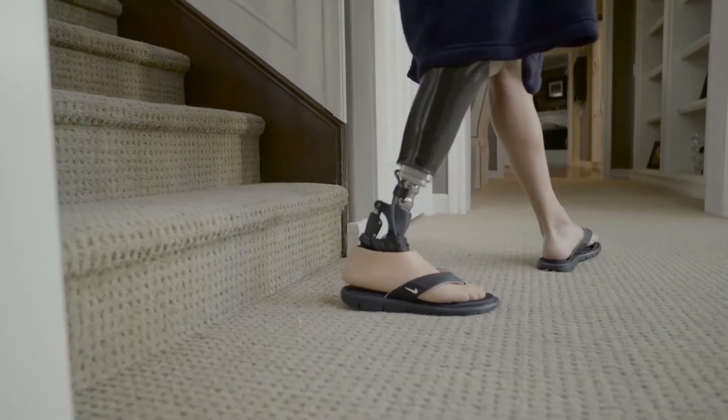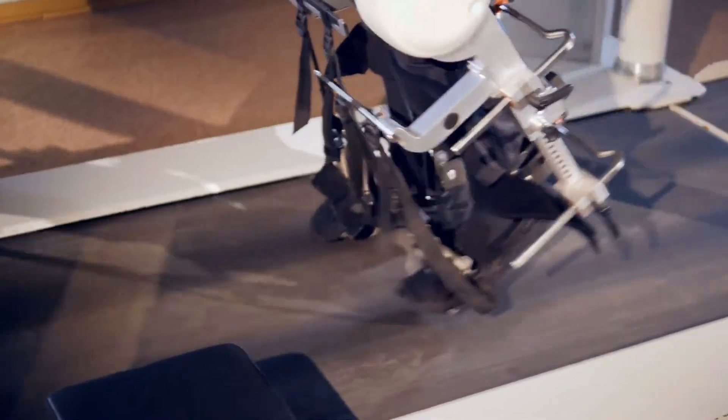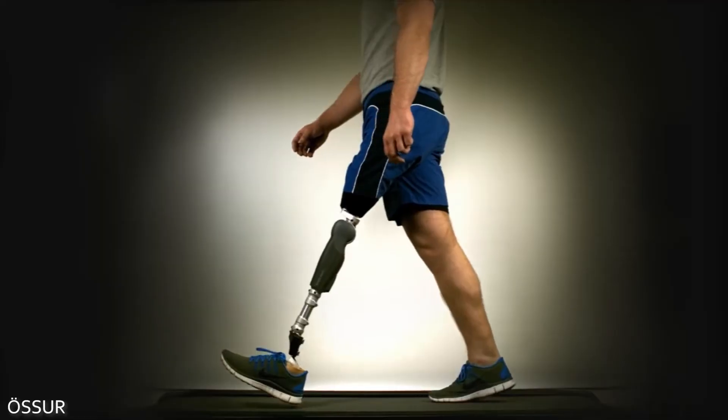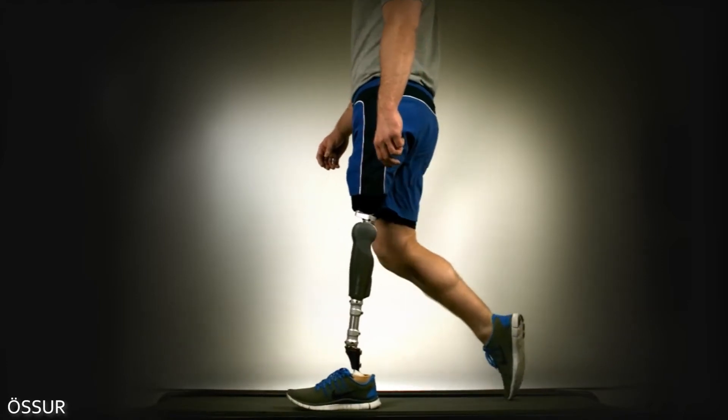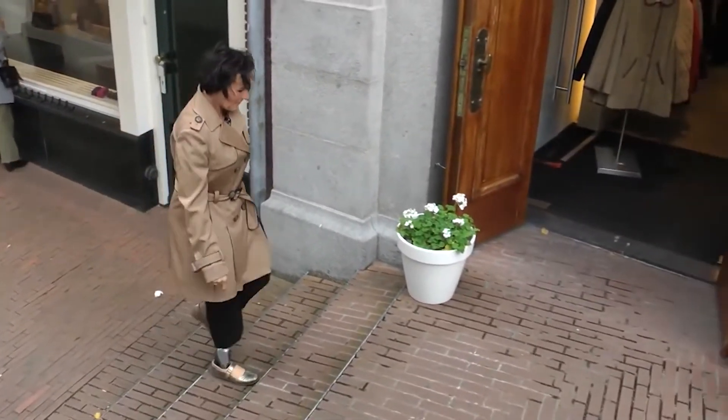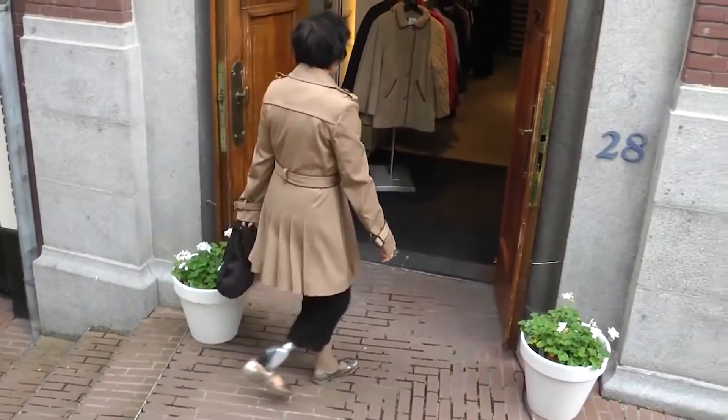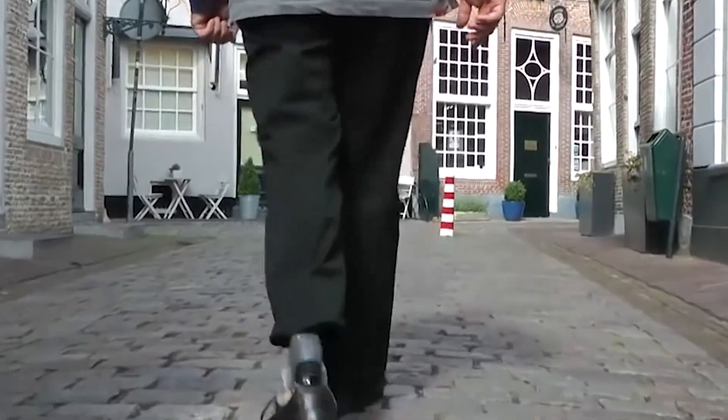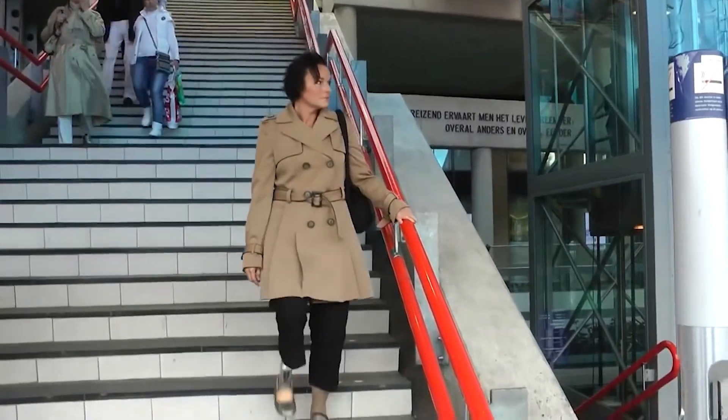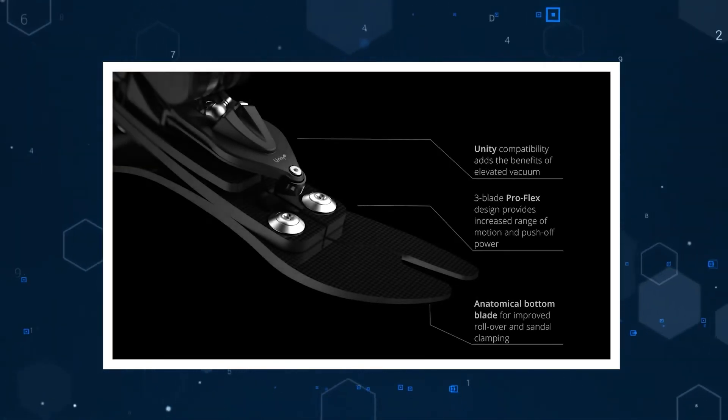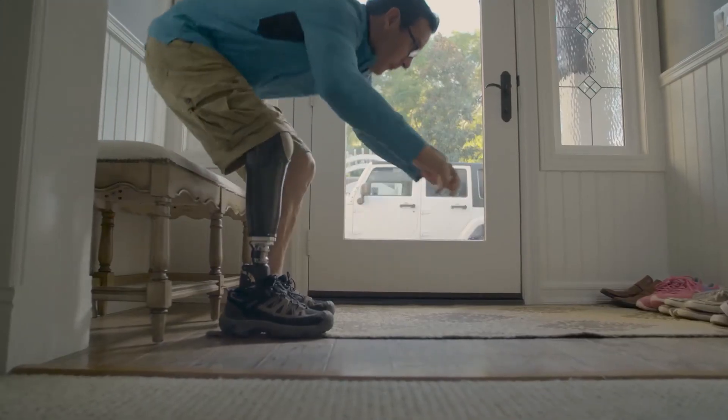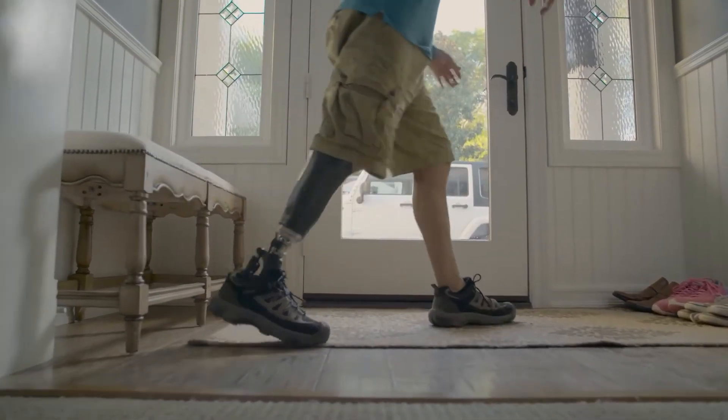The motor-powered ankle motion increases toe clearance in swing phase by raising the forefoot and reducing the risk of trips and falls. It also adjusts the ankle angle to changing terrain, providing stable foot placement on stairs and inclined surfaces. It helps reduce the compensatory movements that users would usually make with traditional prosthetics. From the lightweight material, the powered ankle, and intelligent terrain adaptation, the foot will soon allow users to walk and stand naturally.